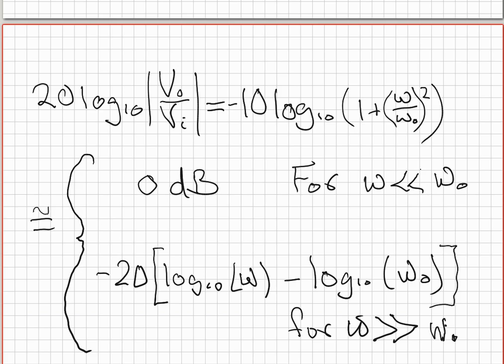Now if we go to the other end where omega is much larger than omega zero, then this one doesn't really matter—it's very insignificant compared to this term. Then you can bring the two out front and it becomes minus 20, and we've got log of the quotient, which is the difference of the logs. So this is the approximation for omega much much greater than omega zero.